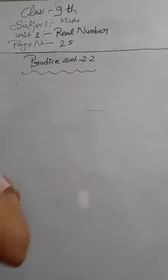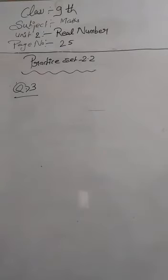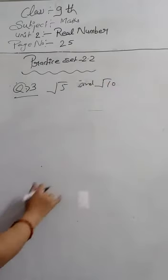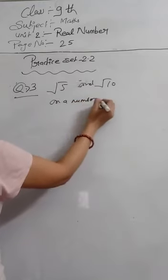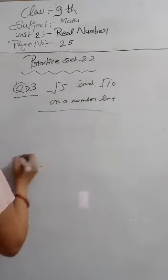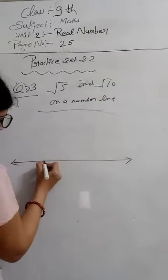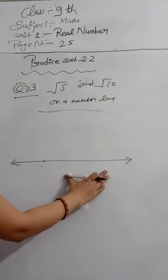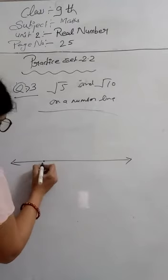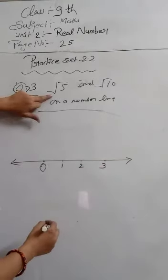Question number 3 is: represent the numbers √5 and √10 on a number line. We have to represent √5 and √10 on the number line. First we will draw the number line. Since √5 and √10 are positive numbers, positive numbers always come on the right hand side.